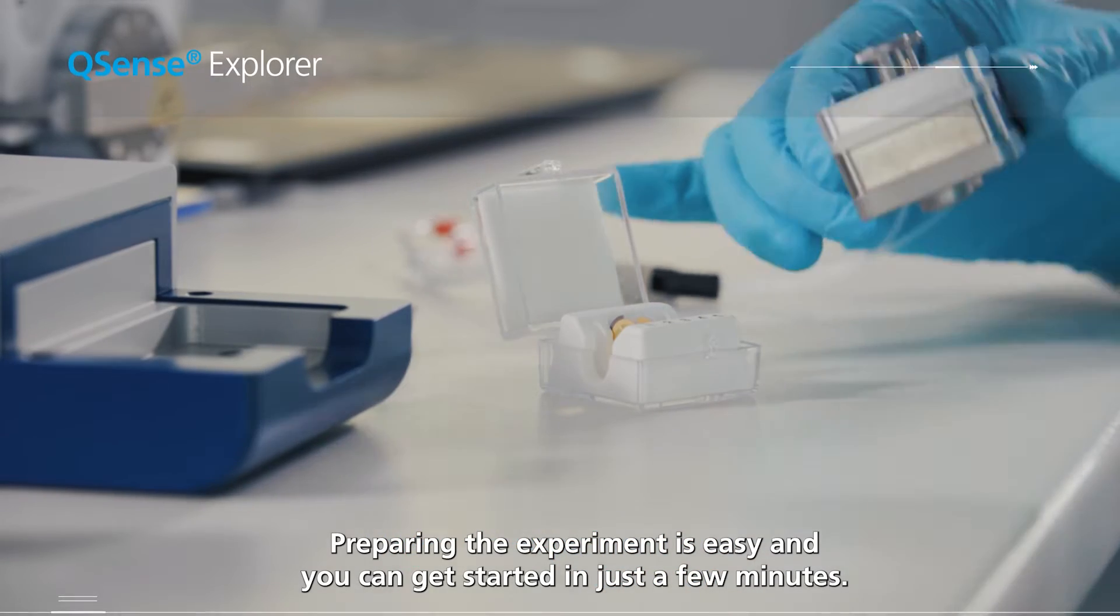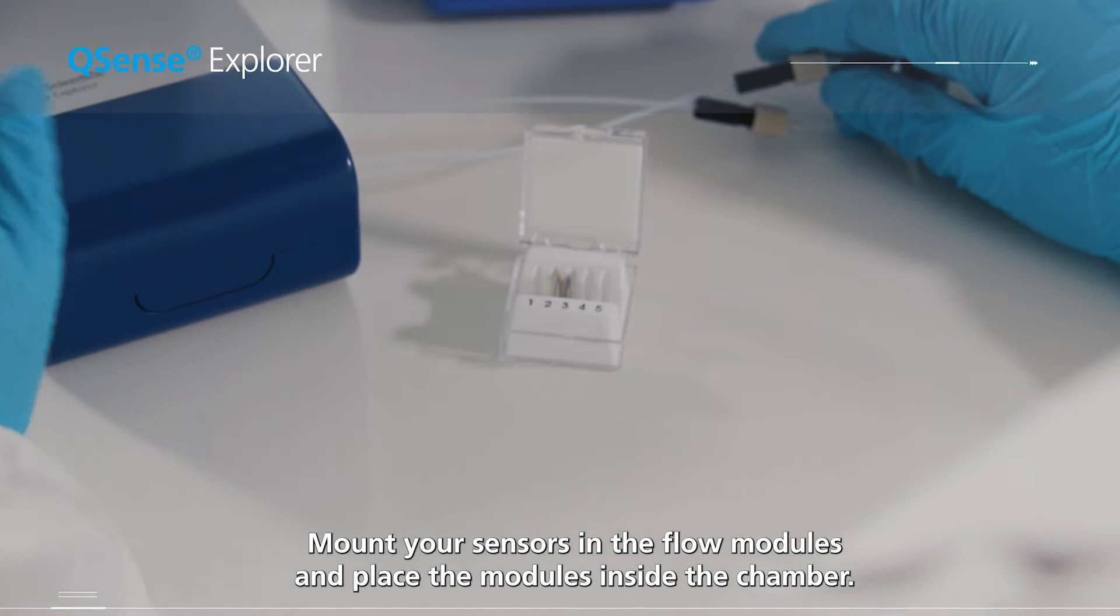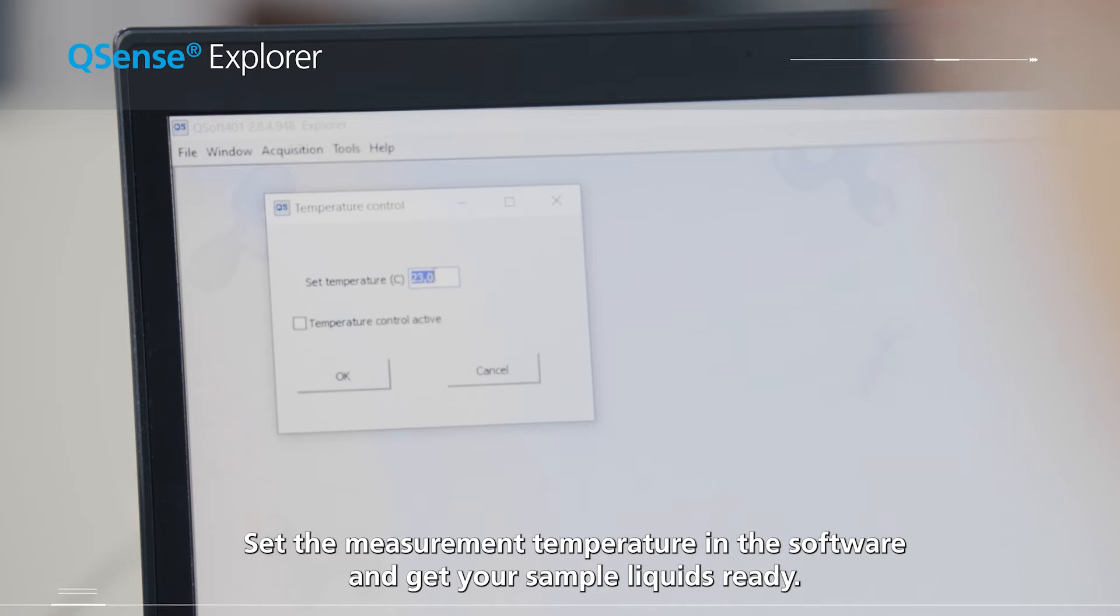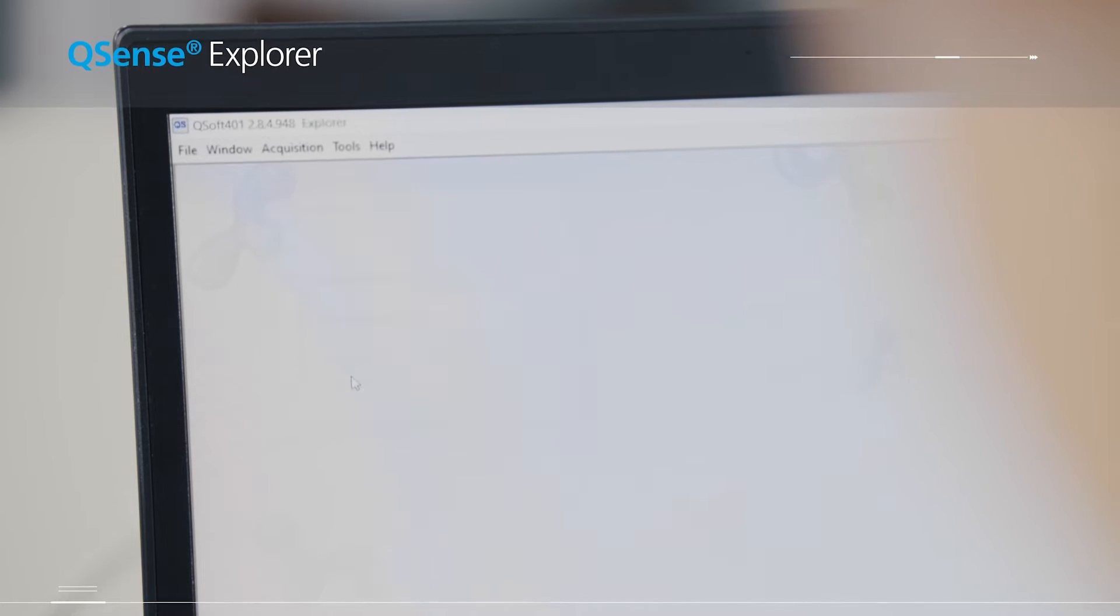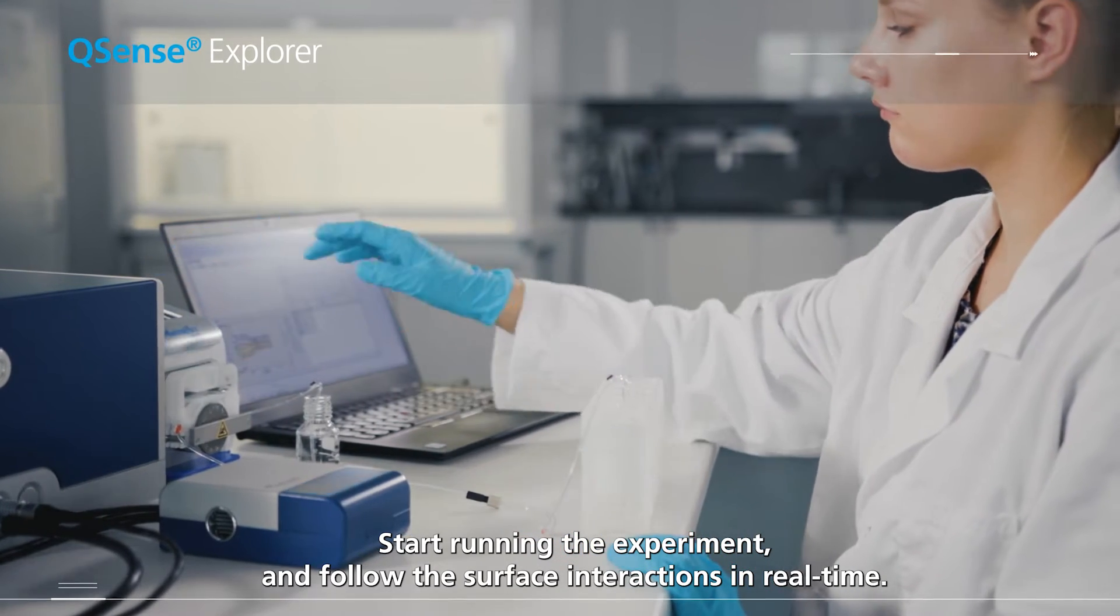Preparing the experiment is easy and you can get started in just a few minutes. Mount your sensors in the flow module and place the modules inside the chamber. Set the measurement temperature in the software and get your sample liquids ready. Start running the experiment and follow the surface interactions in real time.